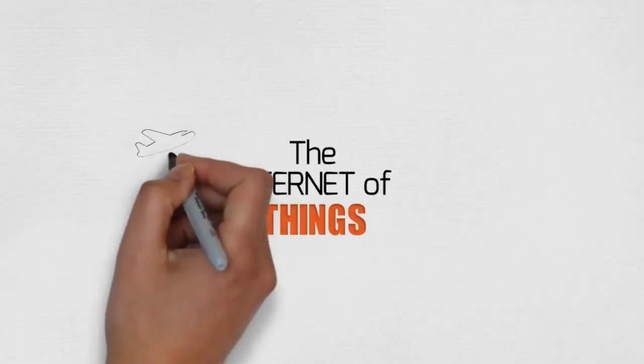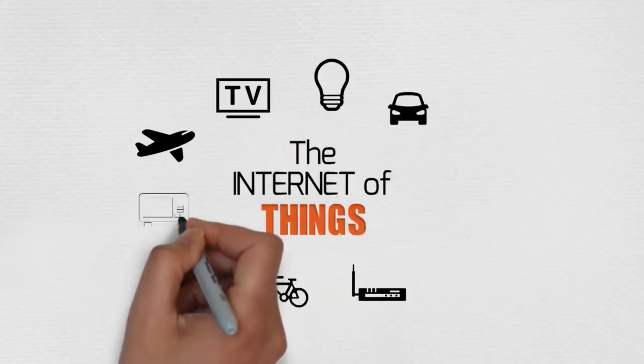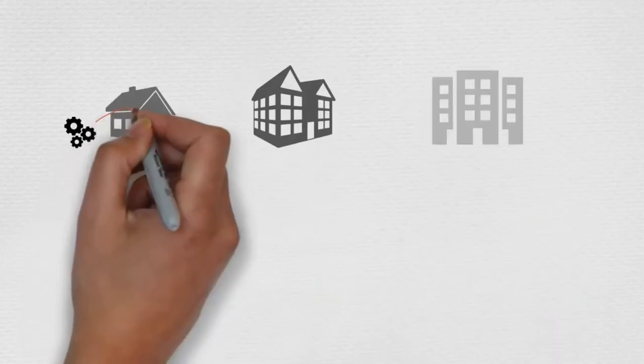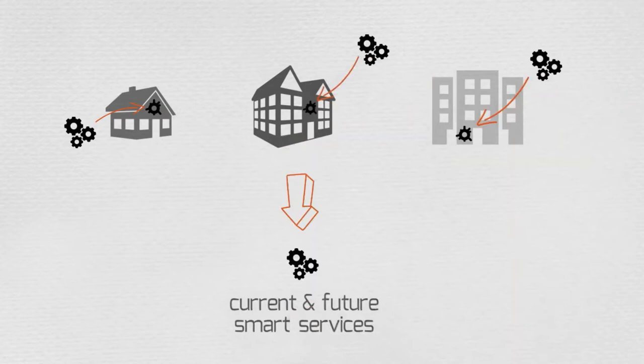The Internet of Things describes the ever-growing number of intelligent objects that are being connected to the Internet and each other. These systems are infiltrating the heart of our critical infrastructure and are forming the basis of current and future smart services.